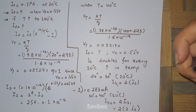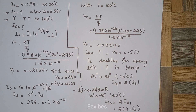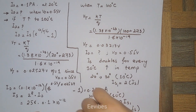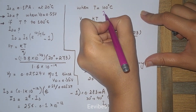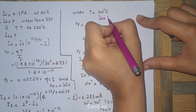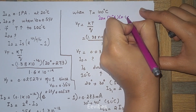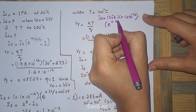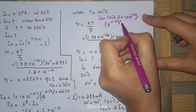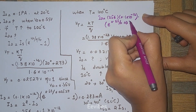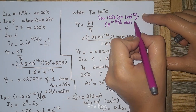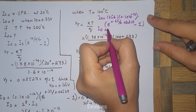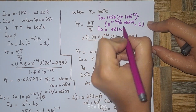The next step is to find the value of ID with the increased temperature and updated IS. ID = 256 × 0.1 × 10^(−12) multiplied by e raised to the power of 0.55 divided by 0.03217, minus 1. When you simplify this, the diode current ID equals 681 microamperes.